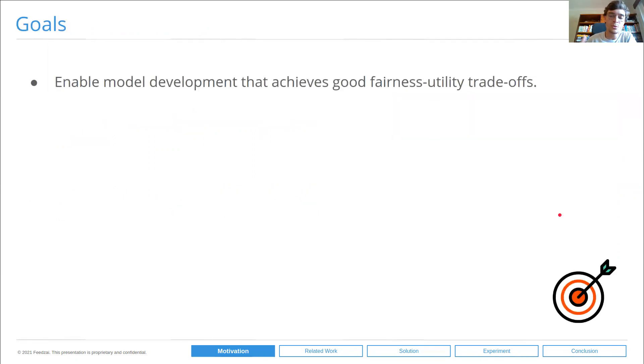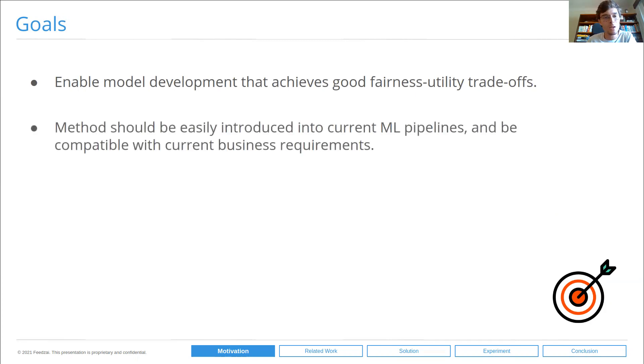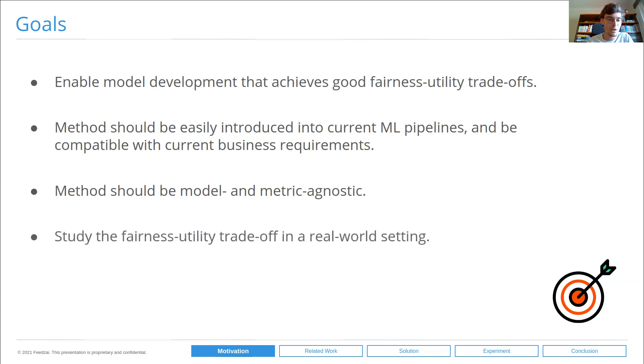Our goals are to enable model development that achieves good fairness utility trade-offs. Our method should be easily introduced into current machine learning pipelines and be compatible with current business requirements. Our method should be model and metric agnostic, making it so there are no barriers to its widespread adoption. And we also aim to study the fairness utility trade-off in a real-world setting.